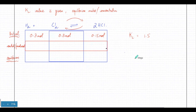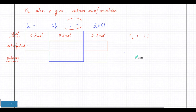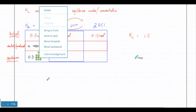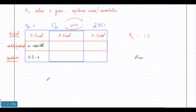Since we have no idea what amount of H2 reacted or was produced at equilibrium, we're going to assume X. Let's say X moles of H2 reacted to reach equilibrium. If X moles reacted and 0.3 moles were initially present, then at equilibrium you'll have 0.3 minus X.